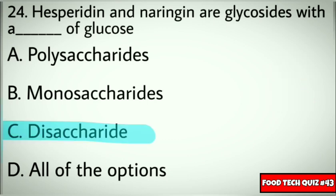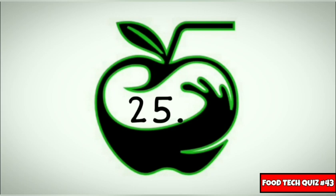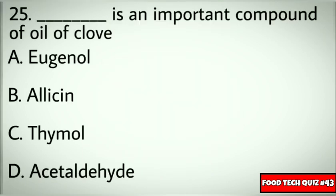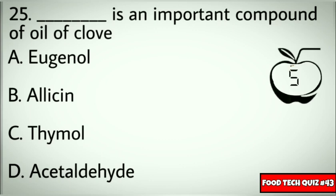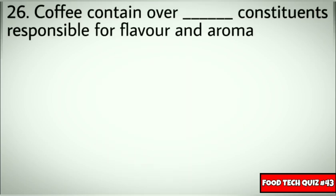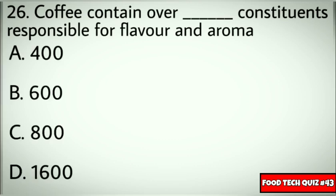Question number 25: Dash is an important compound of oil of clove. Options: A) Eugenol, B) Allicin, C) Thymol, D) Acetaldehyde. Correct answer: A) Eugenol. Question number 26: Coffee contains dash constituents responsible for flavor and aroma. Options: A) 400, B) 600, C) 800, D) 1600. Correct answer: C) 800.